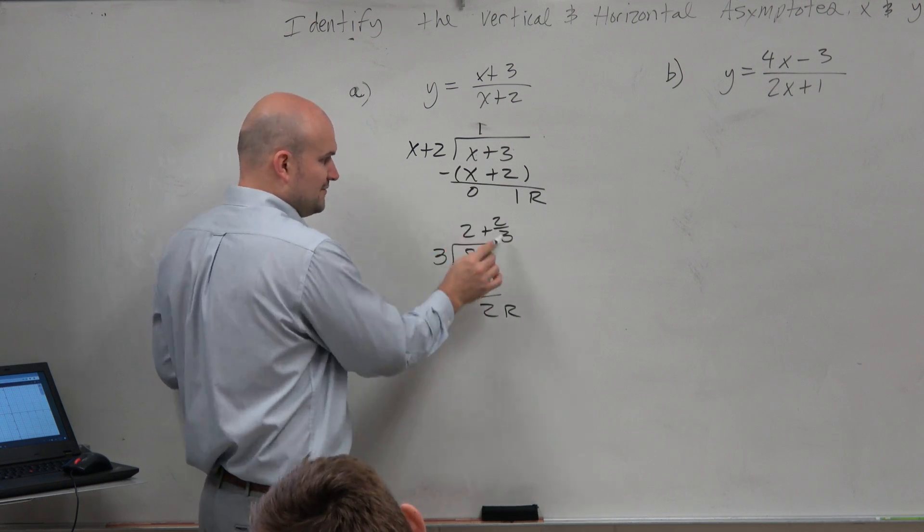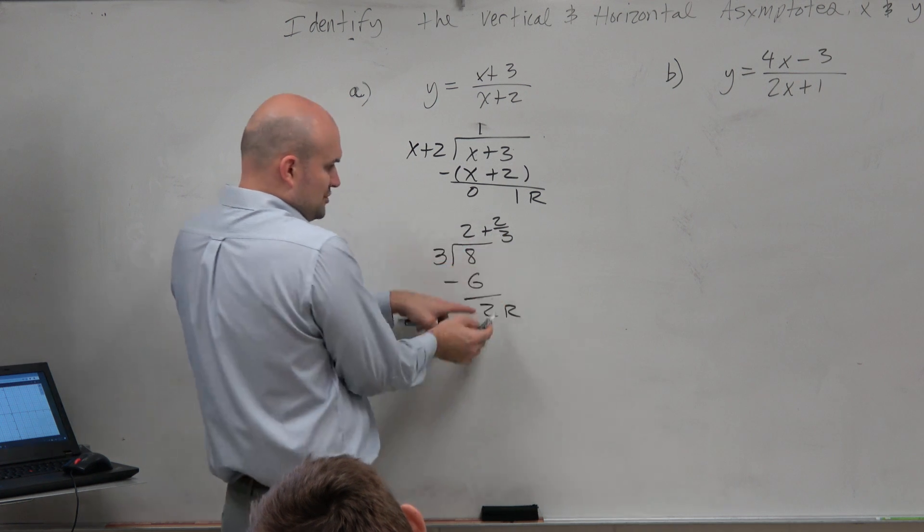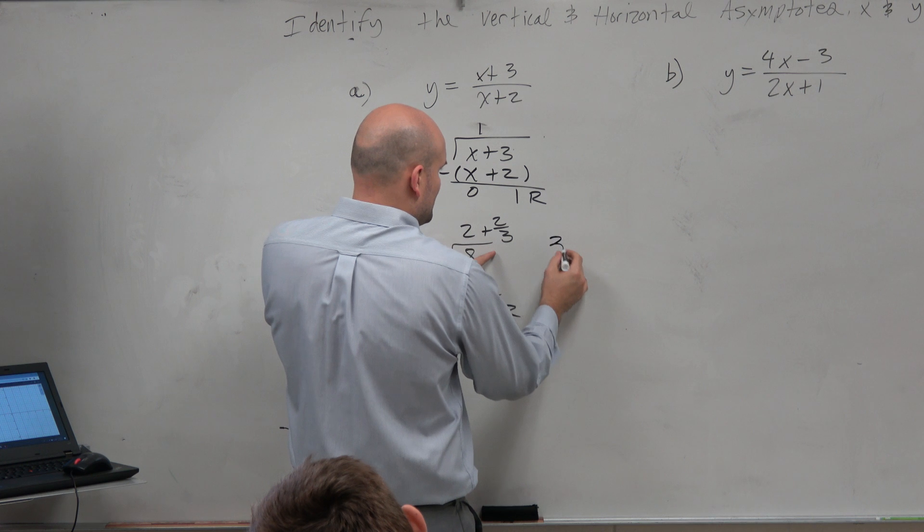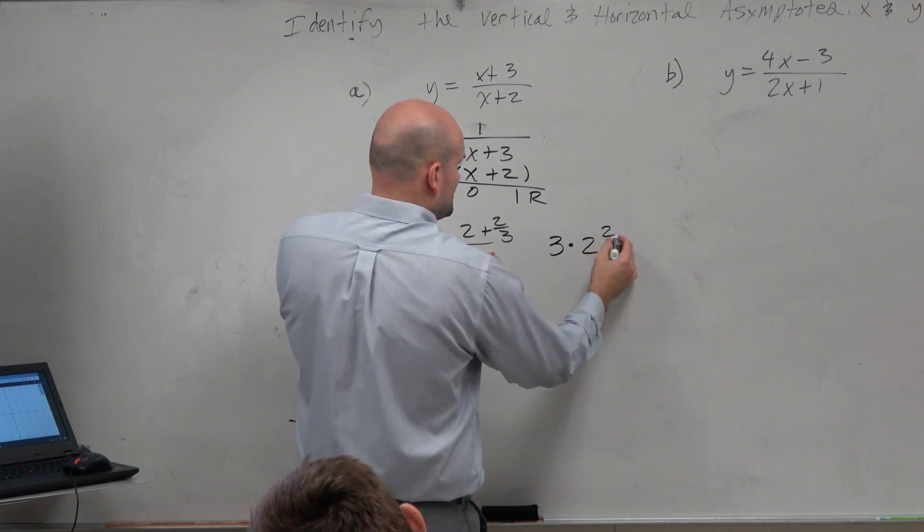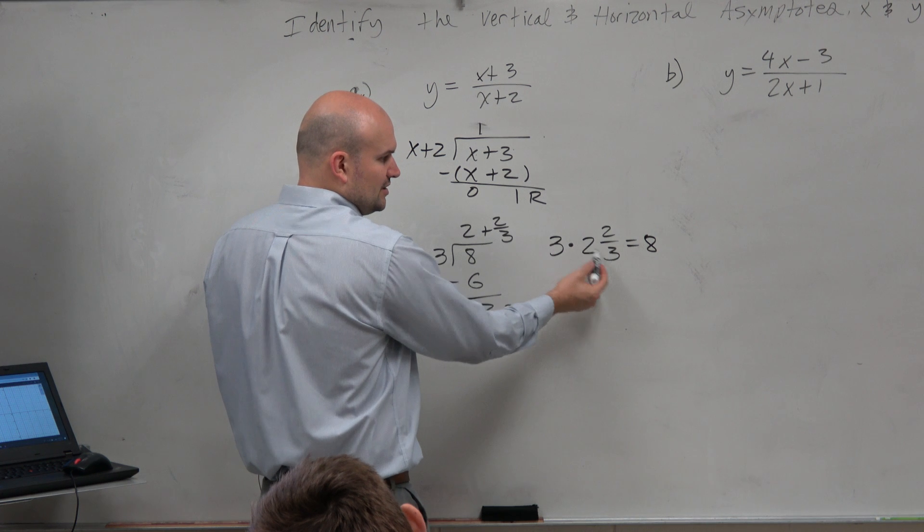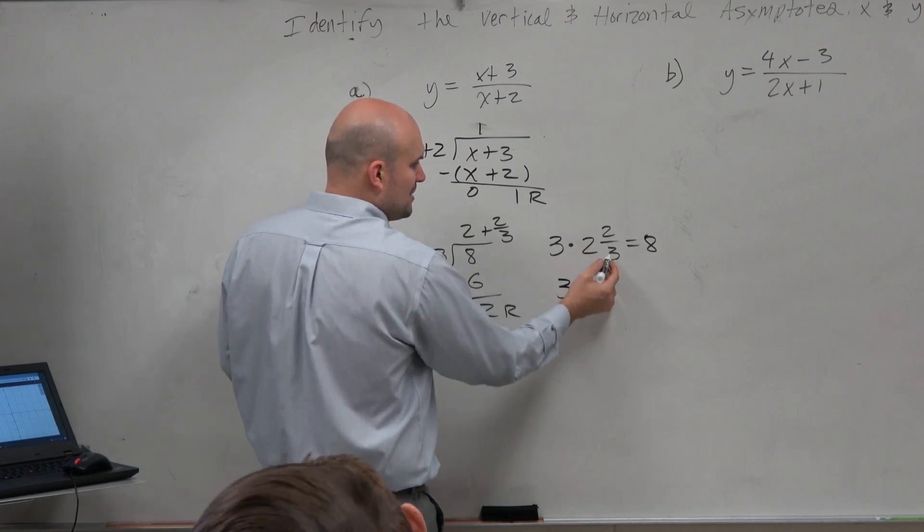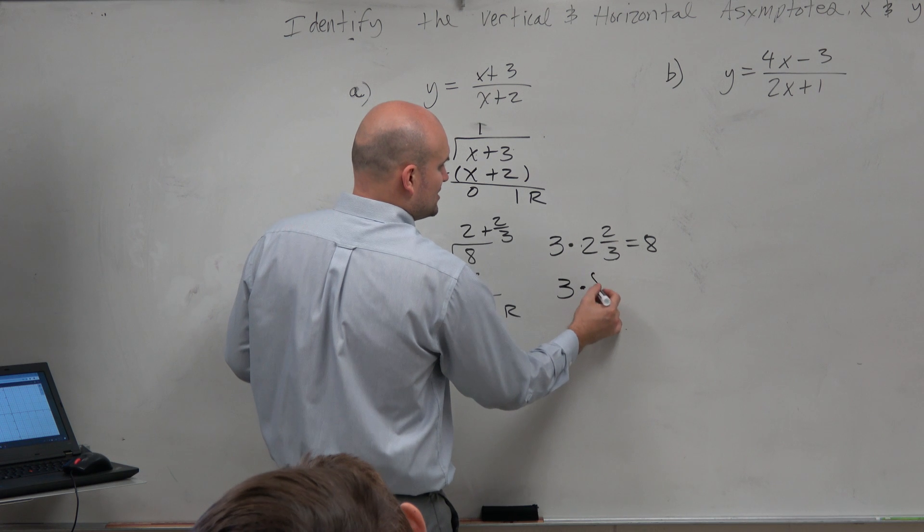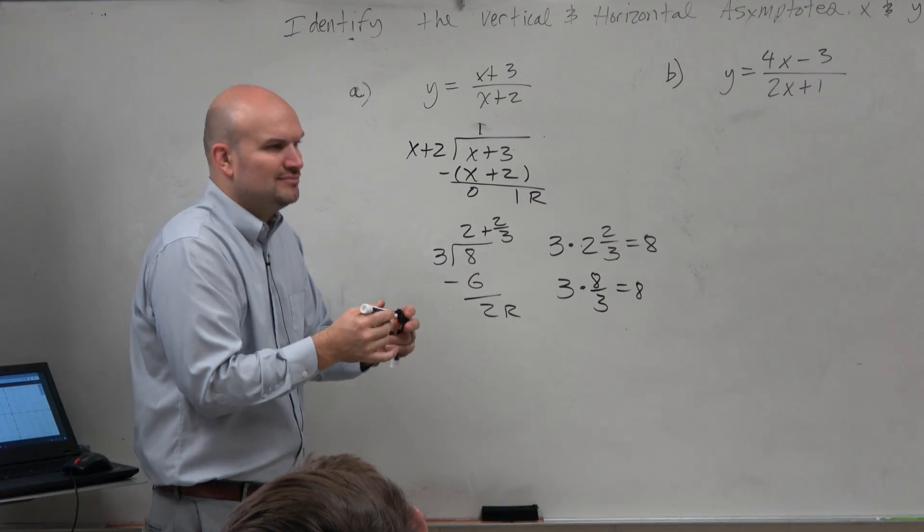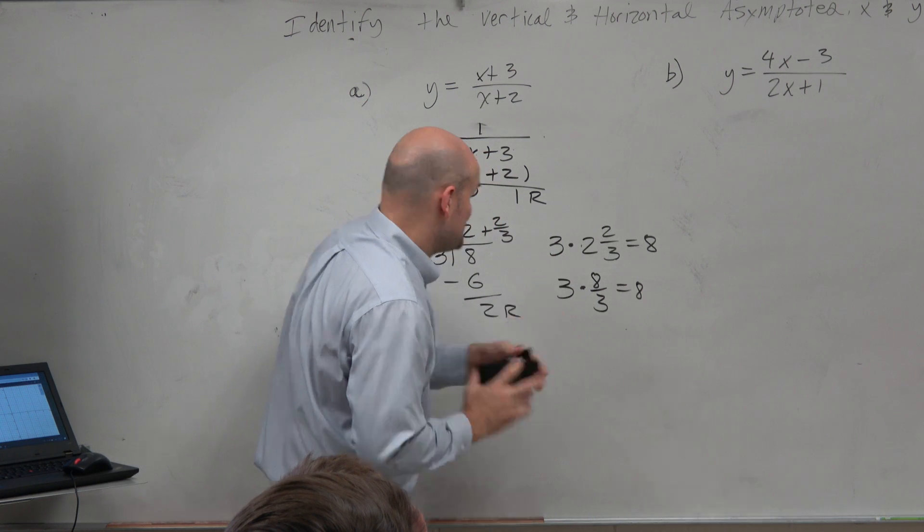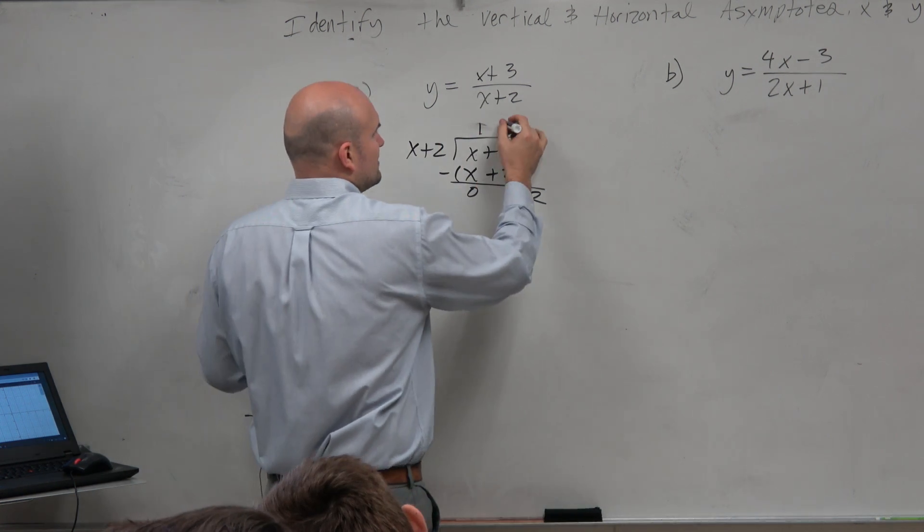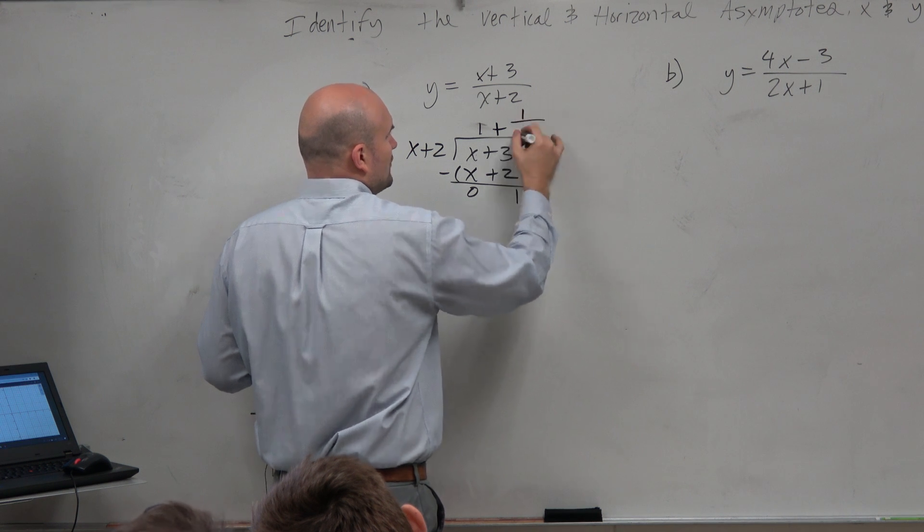So if you guys were to write that, basically what you do is you take the remainder plus your divisor. Because if you were to multiply 3 times 2 and 2 thirds, guess what you'd get? 8. Don't believe me? Convert that to an improper fraction. That's going to be 8 thirds. A little bit of fraction review. If you just want to memorize what Eli said, then that's fine. Just take your remainder over your divisor.